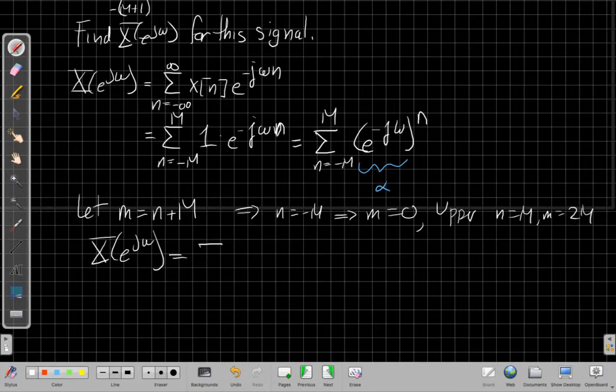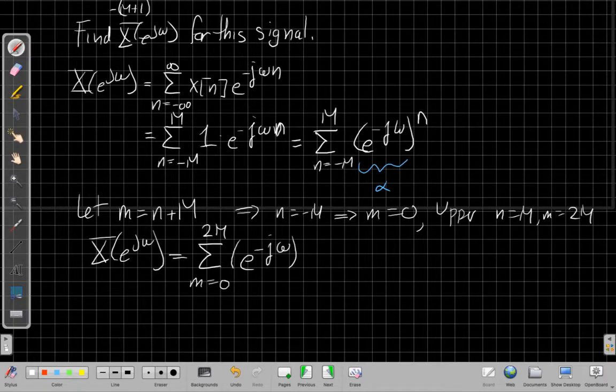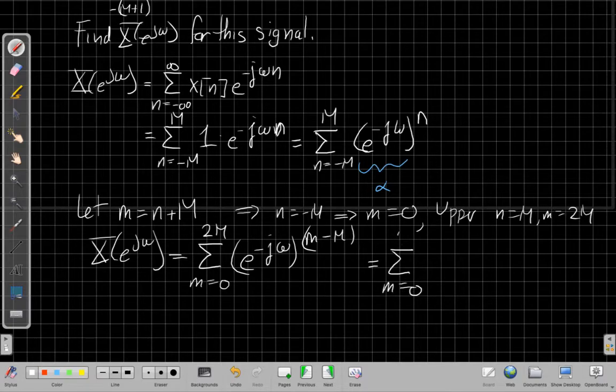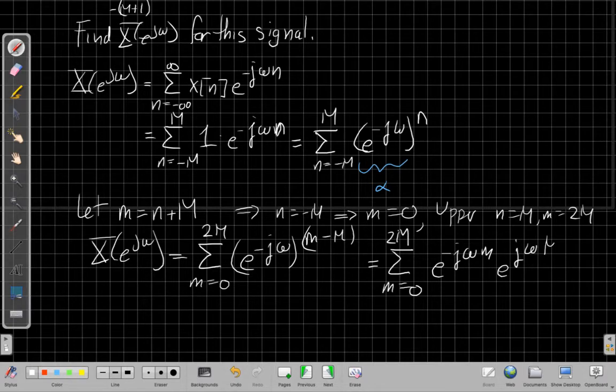So when I make that change of variables, I get now a sum that goes from 0 to 2M. So it has just the same number of terms, still 2M plus 1 terms in it. But I now write this as e to the minus jω. And then I replace n. If I solve that equation, I would have m minus M in the exponent. And using properties of exponents, I can say, well, this is the sum as m goes from 0 to 2M of e to the minus jω times little m, and then e to the plus jω times big M.